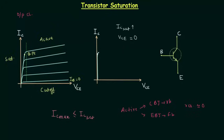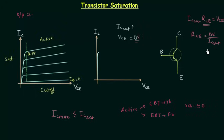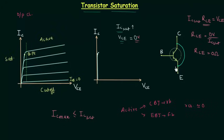We will find the resistance using Ohm's law. IC_sat multiplied by RCE equals VCE. We want to find RCE, so RCE equals VCE divided by IC_sat. Since VCE equals 0V, the resistance RCE equals 0 ohms. This means there is no resistance between the collector and emitter terminals, and we can short-circuit the two terminals.